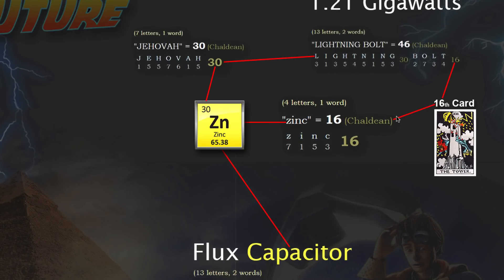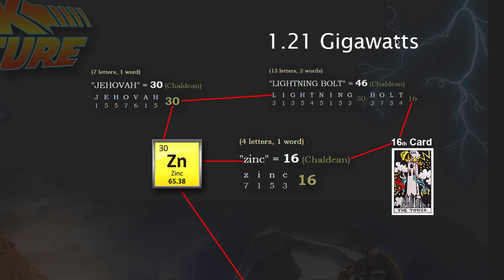Going back to the lightning bolt — as Doc Brown said, 1.21 gigawatts. Look at what the word 'lightning bolt' breaks down to: lightning is a 30, just like Jehovah. Bolt equals 16, and the 16th card in the ancient tarot system is the Tower card. In Hinduism, Lord Shiva equals 16 — destruction and regeneration — a lightning bolt coming down and destroying that tower. And zinc, the 30th element tied to Jehovah, also equals 16, just like bolt, tied to the Tower card.